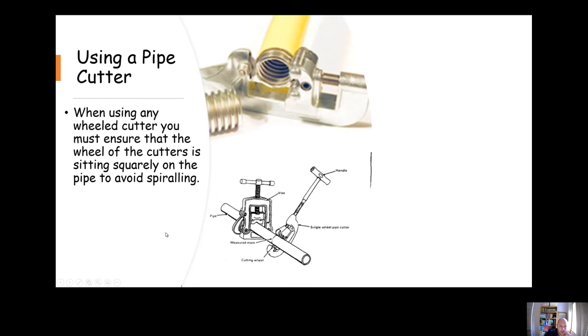When using a pipe cutter it's straightforward enough. Make sure that you put the pipe cutter flush on the pipe. If it's an adjustable one you tighten it until it's just lightly gripping the pipe, then you turn it a few times to get a nice groove, tighten it a little bit, turn it a few times again. Make sure that it's sitting squarely on the pipe so it doesn't spiral up the pipe.